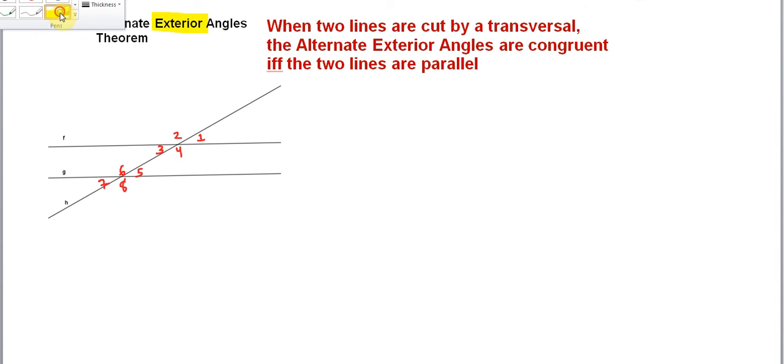Let's identify the alternate exterior angles here. If I have angle 2, then angle 8 is the alternate exterior angle. Angle 2 and angle 8 are alternate exterior angles. We can also say that angle 1 and angle 7 are alternate exterior angles. Those are the only two pairs in this picture.